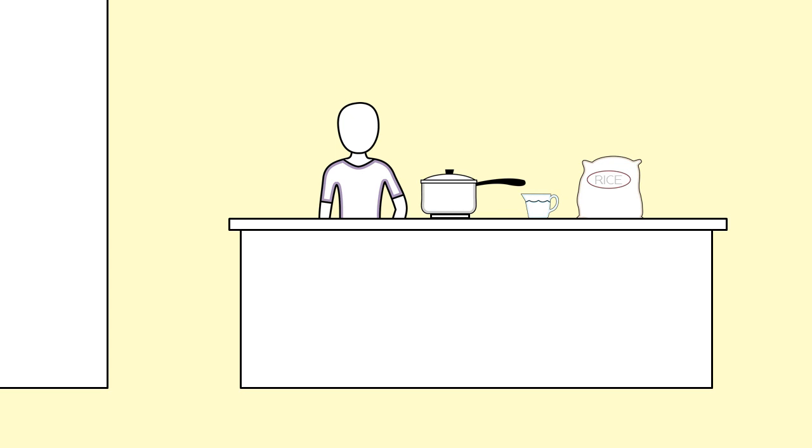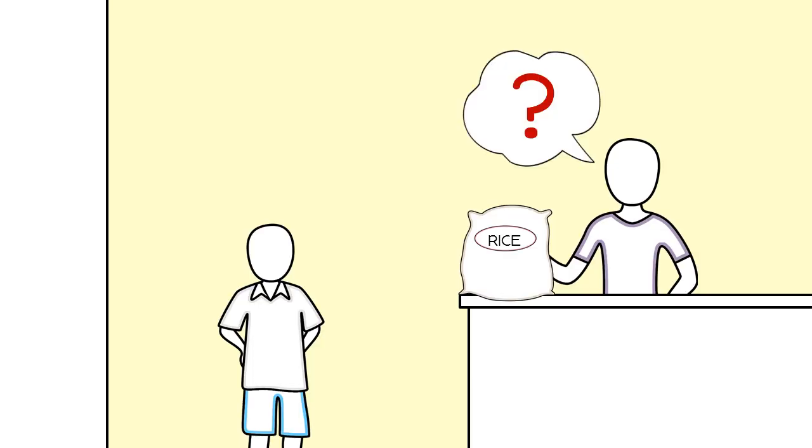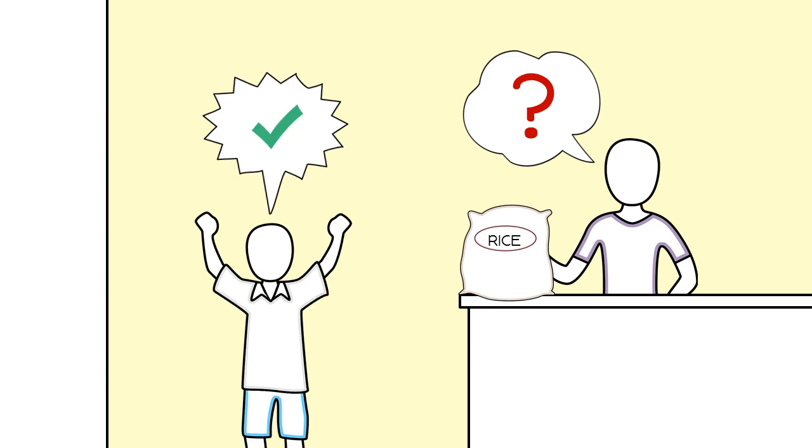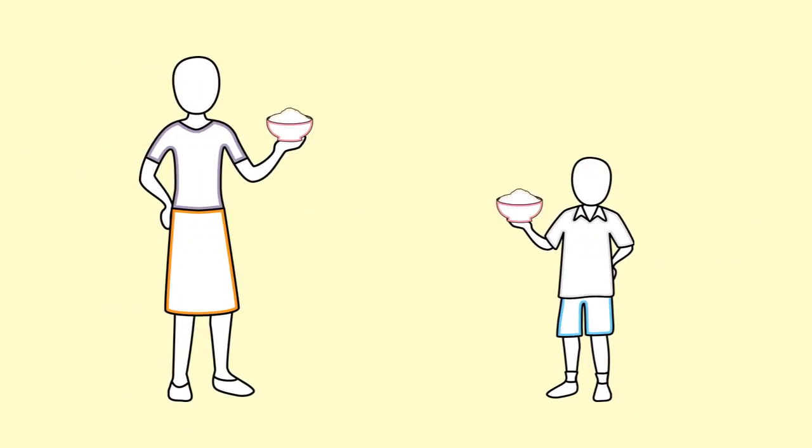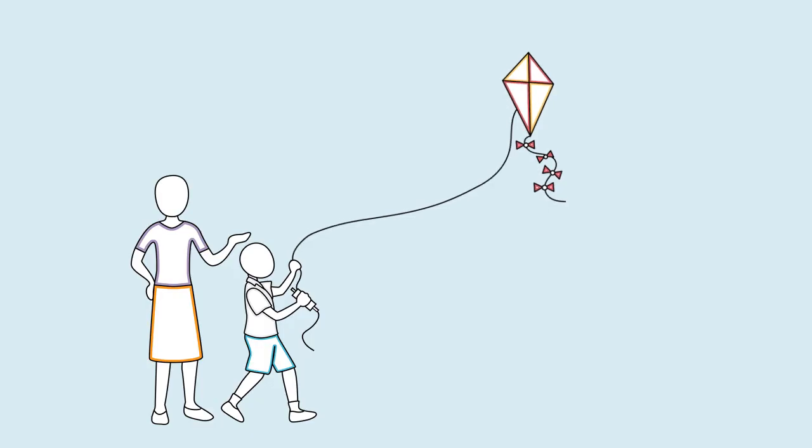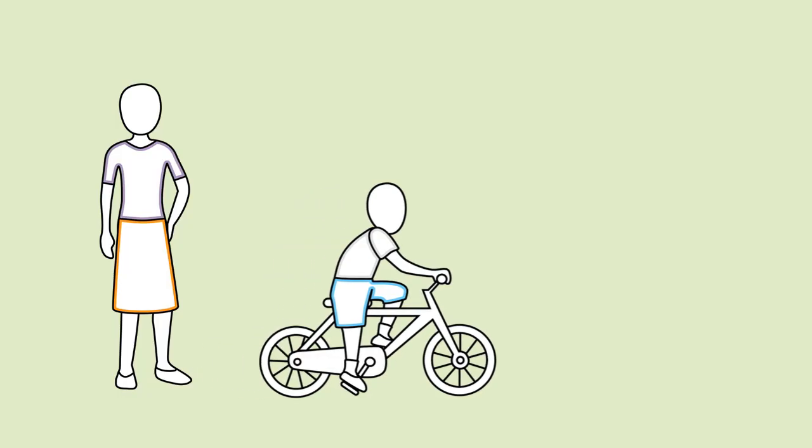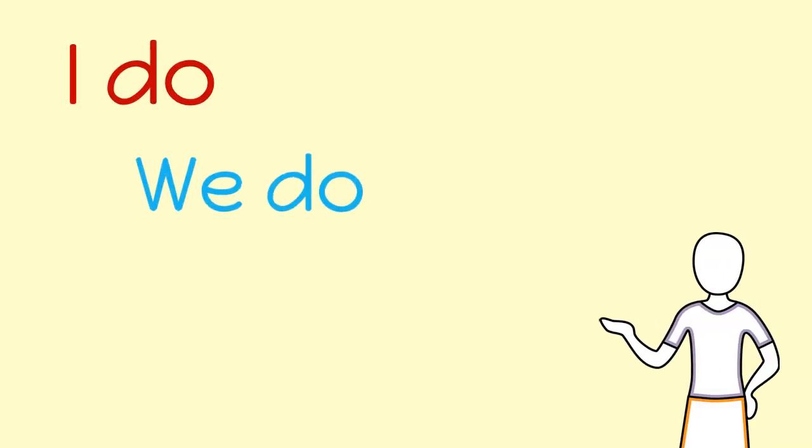A few days later, I noticed my little brother watching me make the rice. Would you like to learn the secret, I asked. He said yes, so I taught him the same way my mom taught me. The strategy worked so well that now I use it to teach my brother all kinds of useful things. I just remembered to use I do, we do, you do.